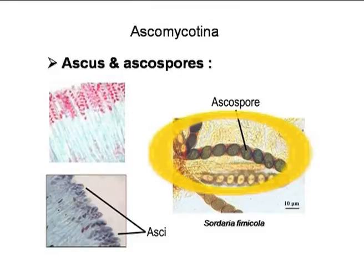The typical sex organs of Ascomycotina are antheridium and ascogonium. Antheridium is the male sex organ and ascogonium is the female sex organ. However, in some cases the ascogonium may be absent, or in some cases the antheridium may be absent also. These two sex organs usually fuse with each other and give rise to sexual spores known as ascospores, which are produced in a sac-like covering called ascus. Within each ascus, eight ascospores are usually present, but their number may be four, as in Neurospora tetrasperma.